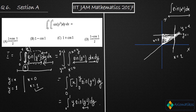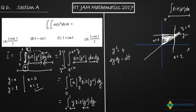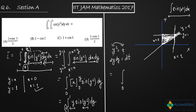To integrate this, we use the substitution y squared equals t. Then 2y dy equals dt, so y dy equals dt over 2. For the limits: at y equals 0, t equals 0; at y equals 1, t equals 1 — so the limits remain the same. Substituting, y dy is replaced by dt over 2, giving the integral from 0 to 1 of sine of t times dt over 2.